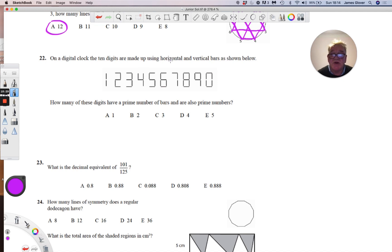Ten digits are made up using horizontal and vertical lines. How many of these digits have a prime number of bars and are also prime numbers? So let's look at the prime numbers: there's seven, five, three, and two. The number of bars here is one, two, three, four, five...